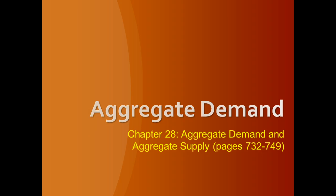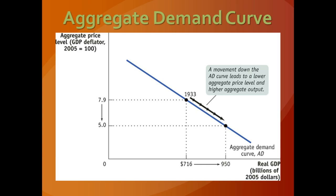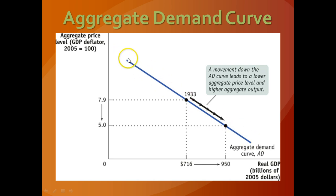When it comes to aggregate demand itself, the aggregate demand curve is the combination of aggregate price level and output demanded at that price level — just a series of possible outcomes. For example, if the average price level was 7.9, then we would demand $716 billion in GDP. If the price level were 5.0, we would demand $950 billion in GDP. This line represents all the possible outcomes depending on what the price level actually is, and we find that it is a downward sloping curve.